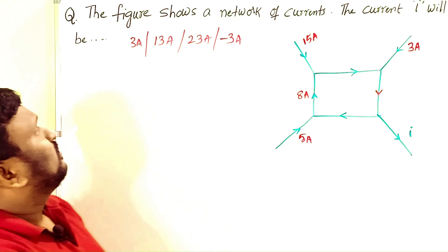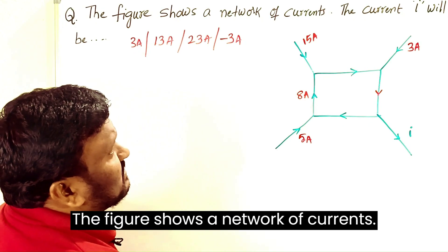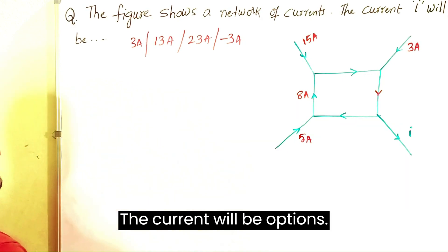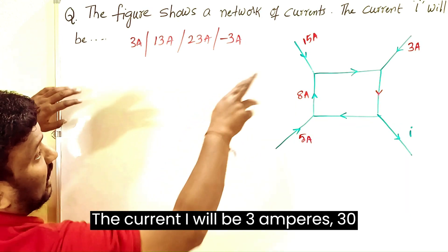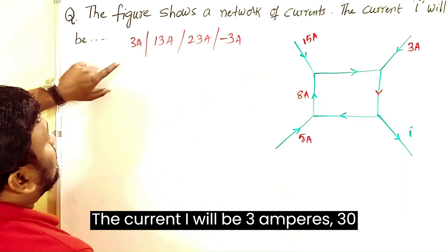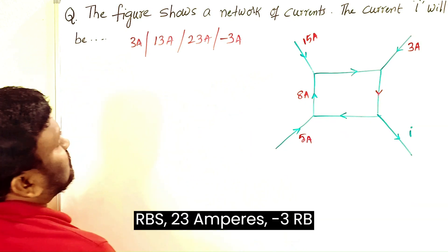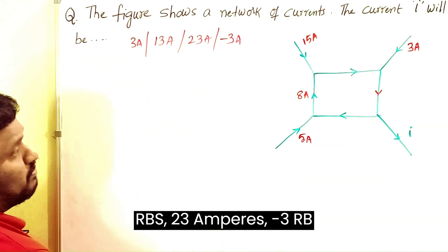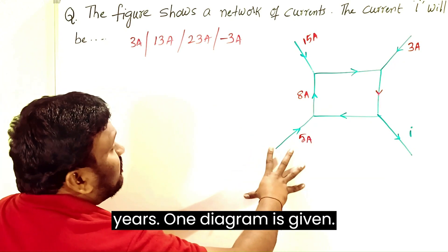Here is one more question. The figure shows a network of currents — the current I will be: options are 3 amperes, 30 amperes, 23 amperes, or minus 3 amperes. One diagram is given.